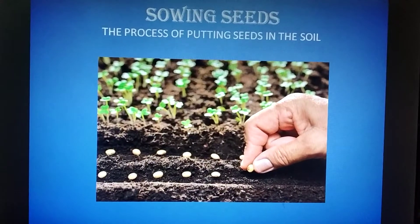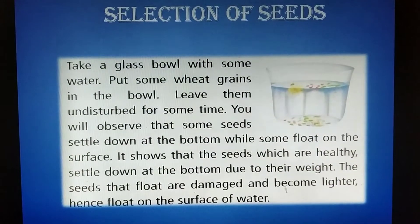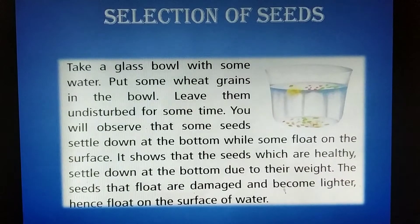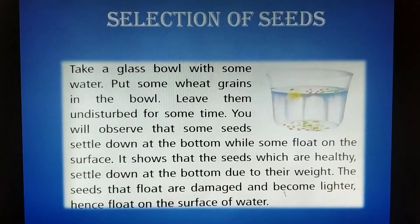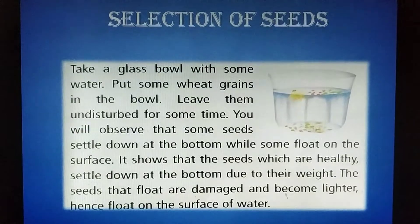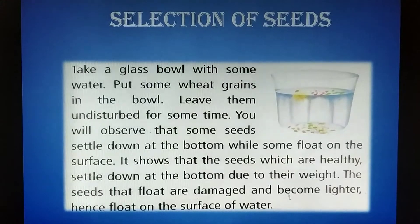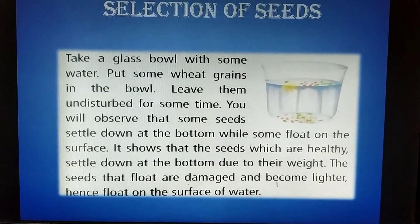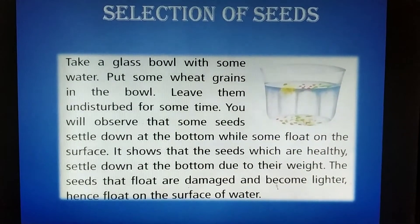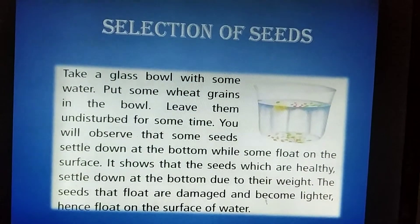For good quality plants, we first need to select good seeds. To identify healthy seeds, you can do this activity: take a glass bowl with some water and put some wheat grains in it. Leave them undisturbed for some time. Seeds that settle at the bottom are heavy and are the good seeds, while seeds that float on the surface are lighter and are damaged seeds. This way you can select quality seeds.